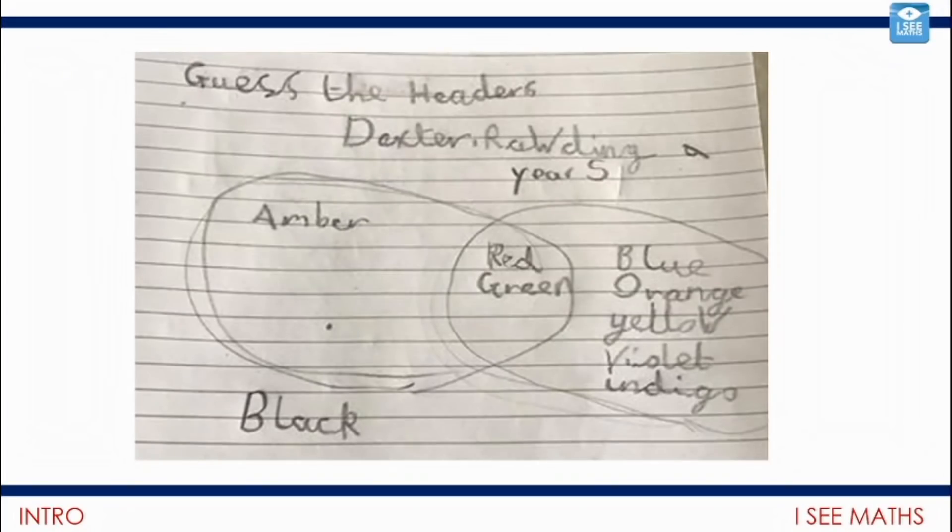You know me, I always like to start with some examples that have been sent through. Here's a cracker from Dexter. This is one of Dexter's Venn diagrams that he sent through last week. Pause the video and work out the headings for each section. The area on the left is the colors of the traffic lights, and the ones on the right are the colors of a rainbow. Black fits in neither section. Red and green are the shared colors. Great example, thank you Dexter.